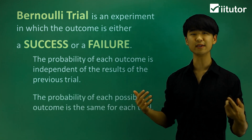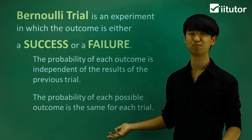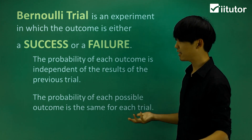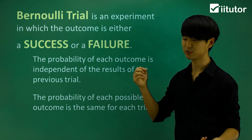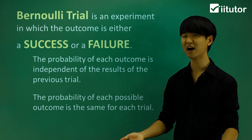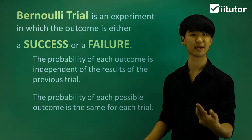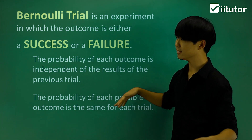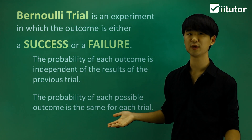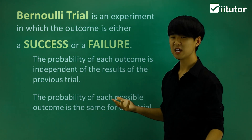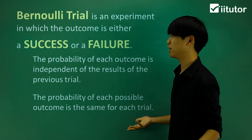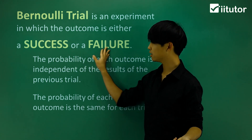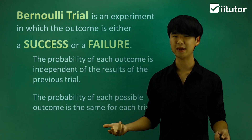One more thing: the probability of each possible outcome is the same for each trial. So again, the probability of getting a head is a half. If I flip it again, the probability of getting a head again is also a half. So it's independent and it's also the same each time. Bernoulli trials have the same ideology as binomial probability — I either get a success or I get a failure.